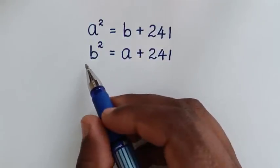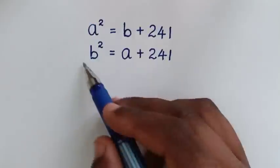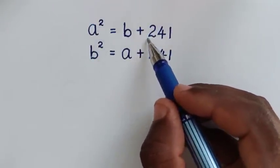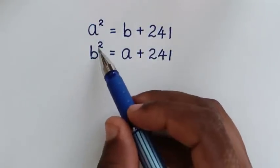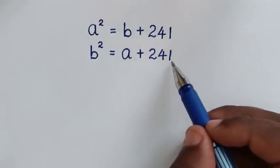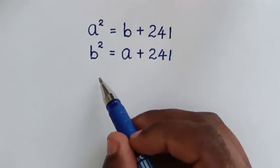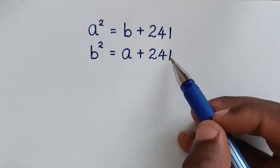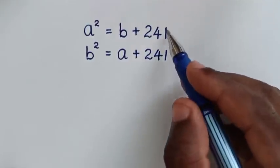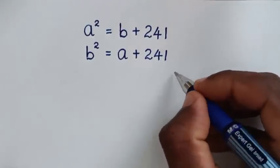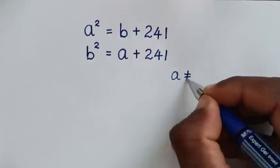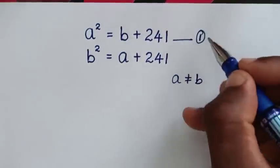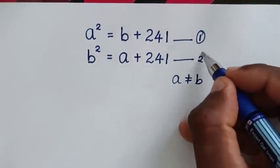Hello, you are welcome to solve this math problem: a squared is equal to b plus 241, and b squared is equal to a plus 241. We need to find the values of a and b from these two systems of equations. We should note the condition that a is not equal to b. We'll label these as equation 1 and equation 2.